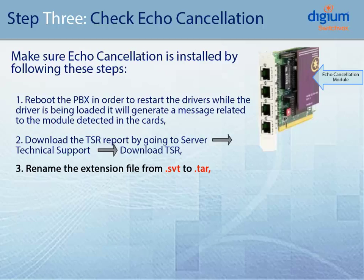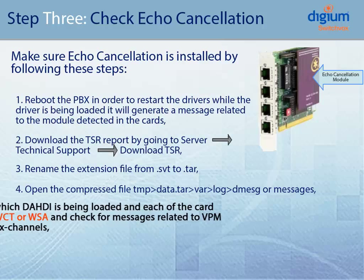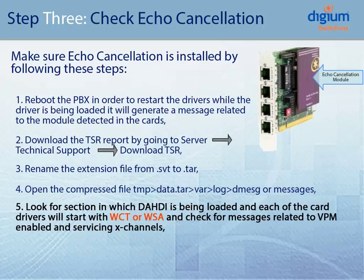Third, you will need to rename the extension file from .svt to .tar. Then, in Step 4, open the compressed file: tmp, data.tar, var, log, dmes, or messages. After you have opened the compressed file, look for the section in which .e is being loaded, and each of the card drivers will start with WCT or WSA. Check for the messages related to VPN enabled and servicing X channels.